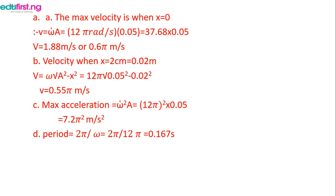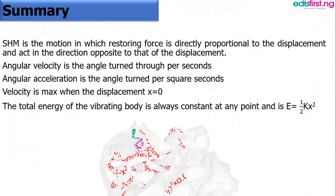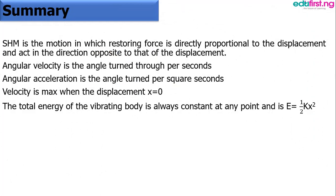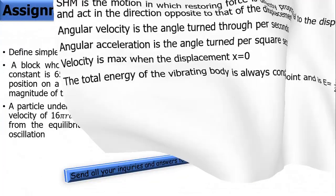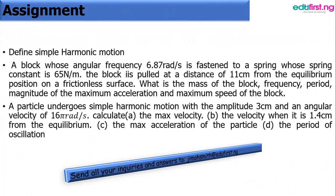In summary, simple harmonic motion is when the restoring force is directly proportional to the displacement but in the opposite direction. The angular velocity is the angle turned, and the total energy equals half k x squared at any point. There are three additional equations for you to solve and submit. If you have any questions, send your answers to the provided email or submit to the link. Thanks very much.